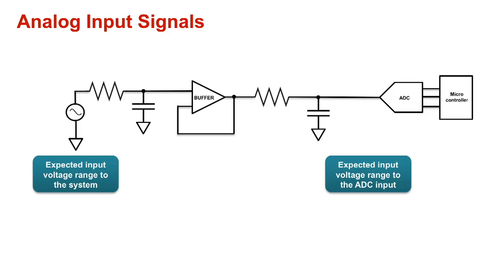In this analog signal chain example, we have an AC source, RC filters, buffer, ADC, and microcontroller. The expected input voltage range to the system and the expected input range to the ADC input are required values to debug customer returns.